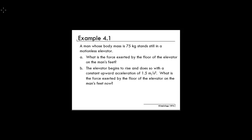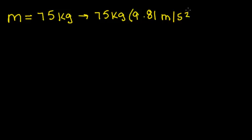So to start, we are going to convert the man's mass, which is 75 kilograms, to weight. We do this by multiplying the 75 kilograms by the acceleration of gravity, which is 9.81 meters per second squared. That equals 735.8 newtons. We're going to come back to this later.